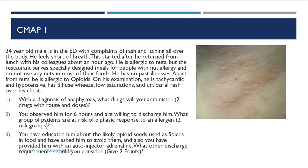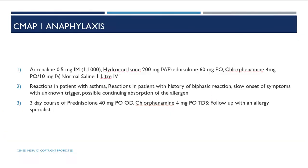The correct answers are: adrenaline 0.5 mg IM 1:1000, hydrocortisone 200 mg IV or prednisolone 50-60 mg orally, chlorphenamine 4 mg — no IV here — and normal saline 1 litre IV.